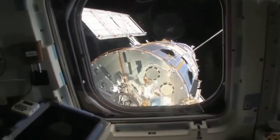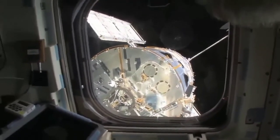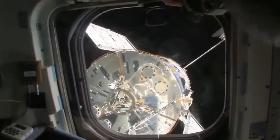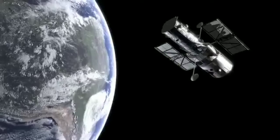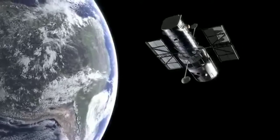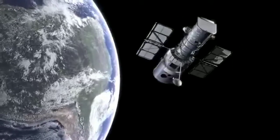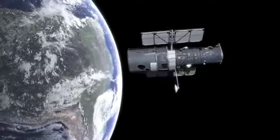However, since the shuttle program ended in 2011, we no longer have the ability to maintain Hubble, which is starting to take its toll on the telescope. Hubble has six gyros on board, which it uses to maneuver and point its telescope precisely toward its target.